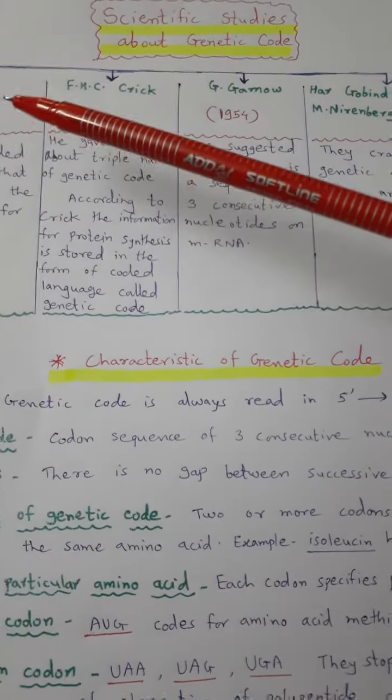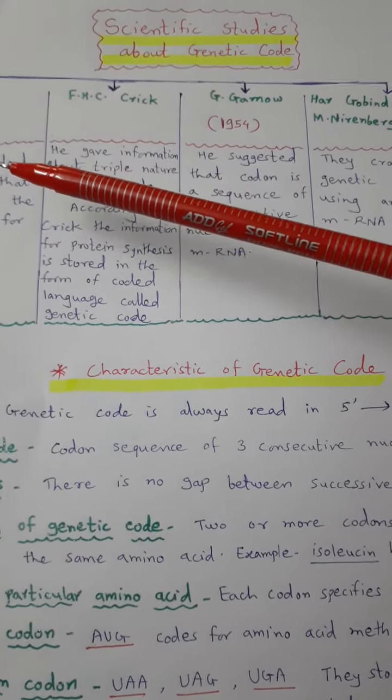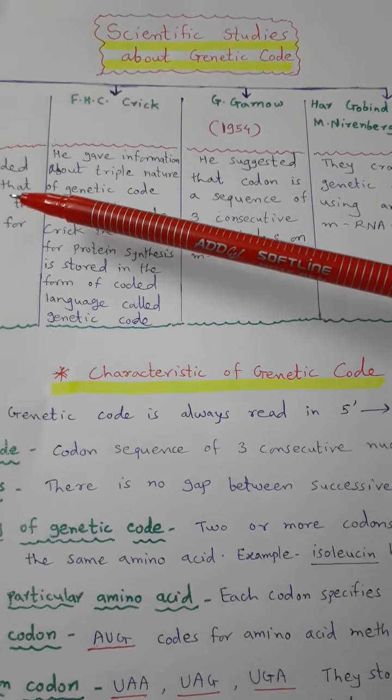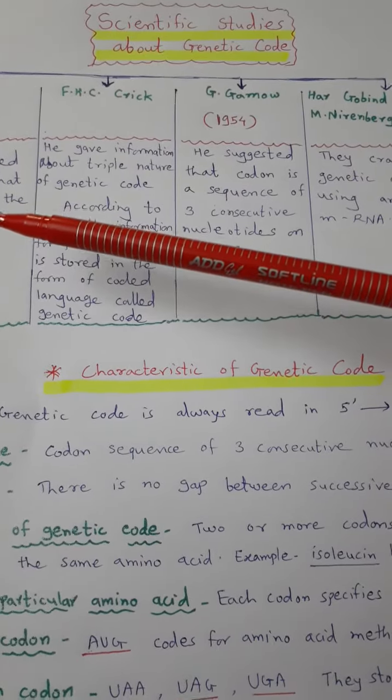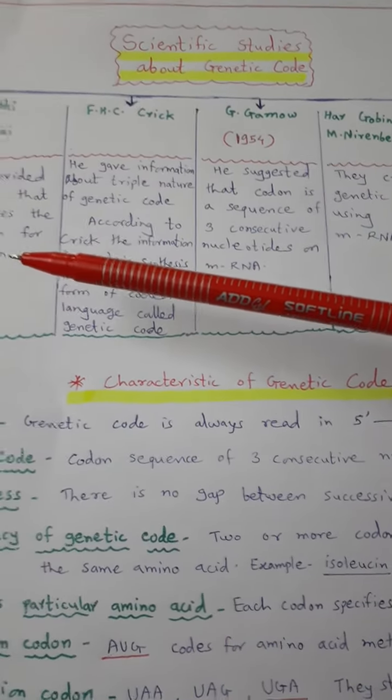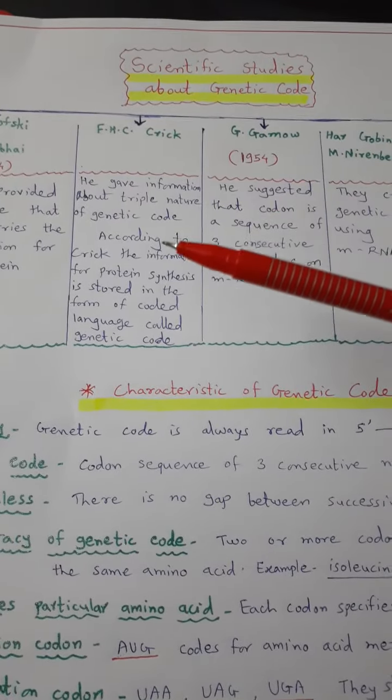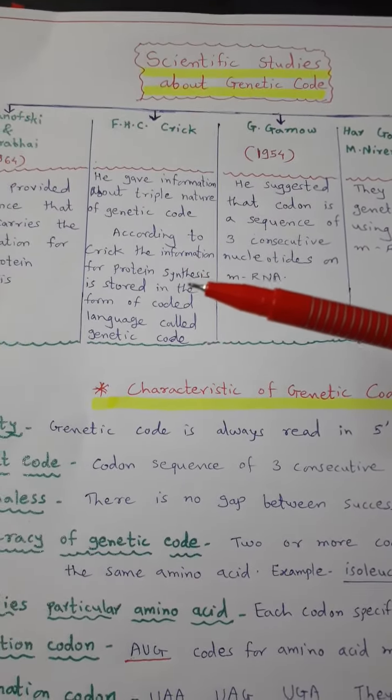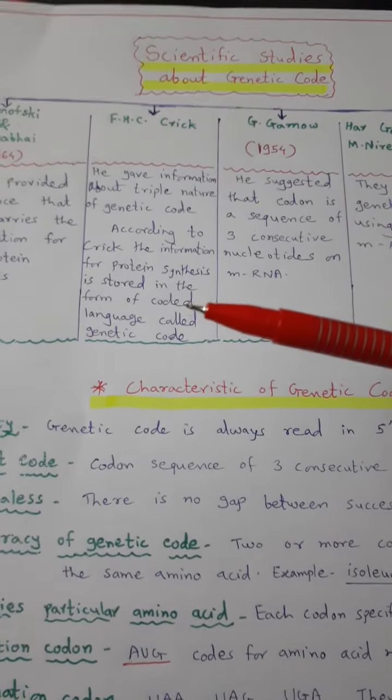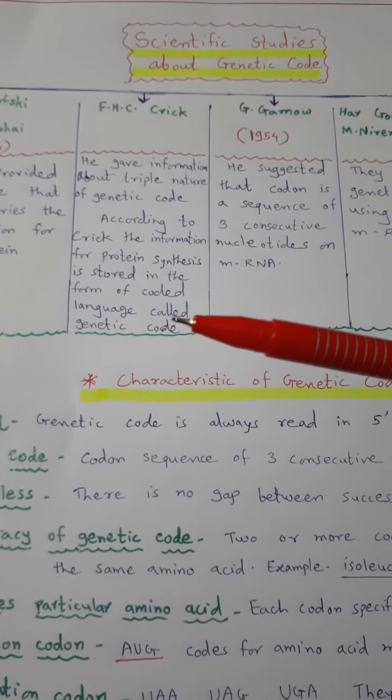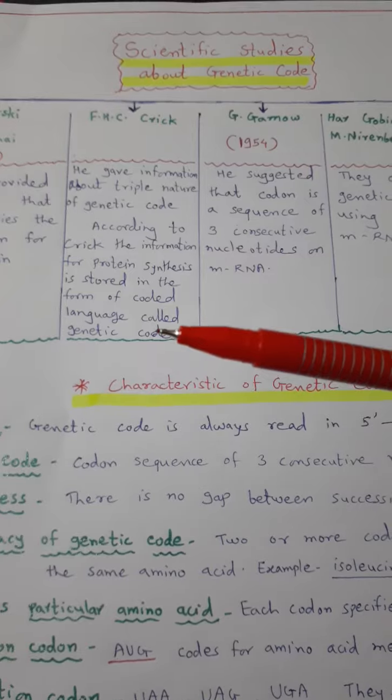The scientist Sarabai in 1964 provided evidence that DNA carries the information for protein synthesis. The scientist Crick explained that the information for protein synthesis is stored in the form of coded language and it is called a genetic code.